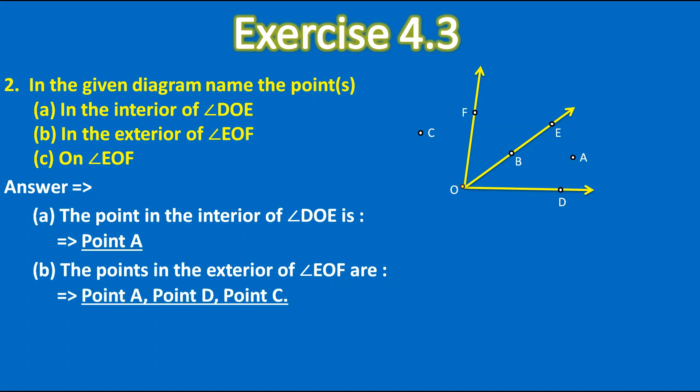Okay next is on angle EOF. So this is the angle EOF. So the points on angle EOF are point E, point B, point O and point F. So this is the answer of the second question.